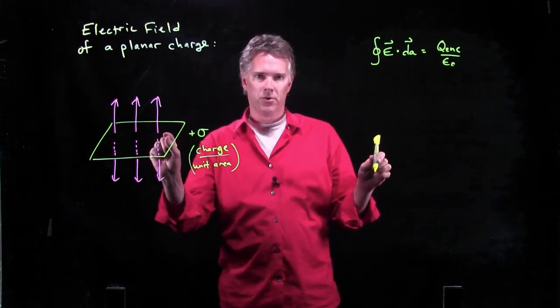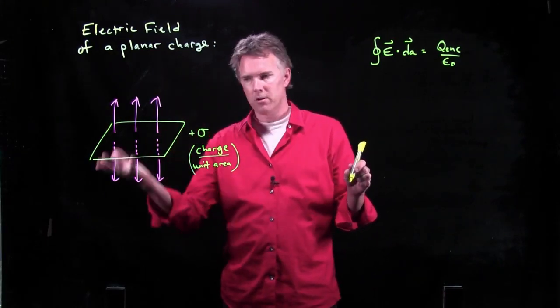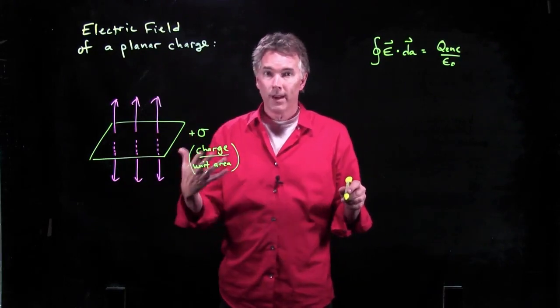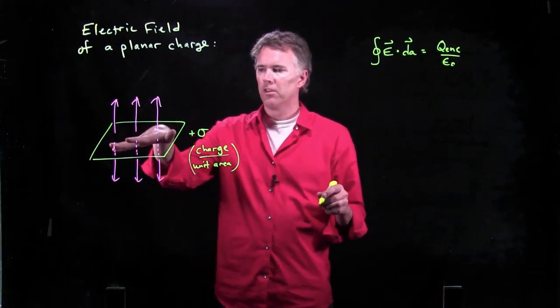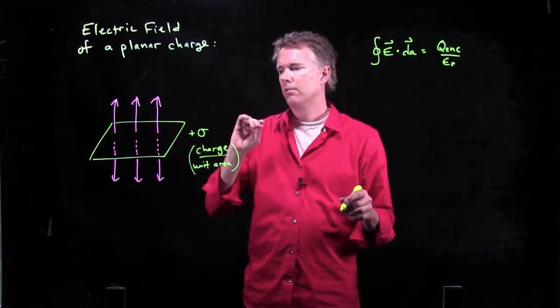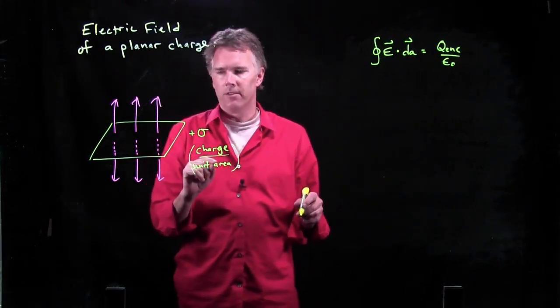All right. We have Cartesian symmetry here, right? We don't have spherical anymore. We don't have cylindrical. We have Cartesian symmetry. It's going to look the same in this planar case. So how do we take advantage of that?